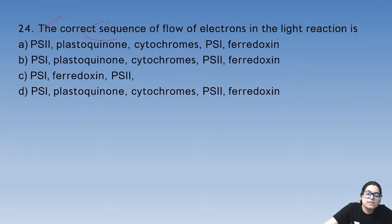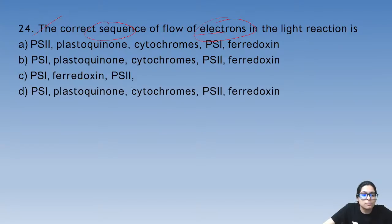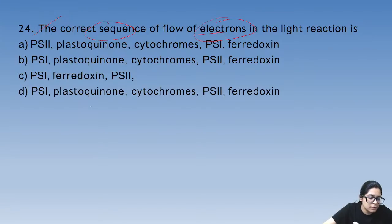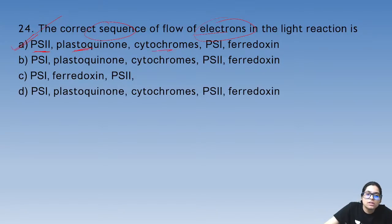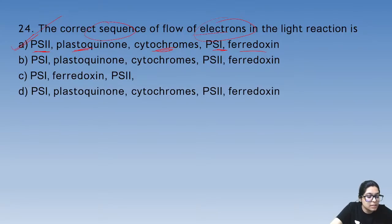Question 24: the correct sequence of flow of electrons in the light reaction — electrons flow from PS2 to Plastoquinone, then Cytochrome, then PS1, then Ferredoxin. This question was easy because you know the story starts at PS2.